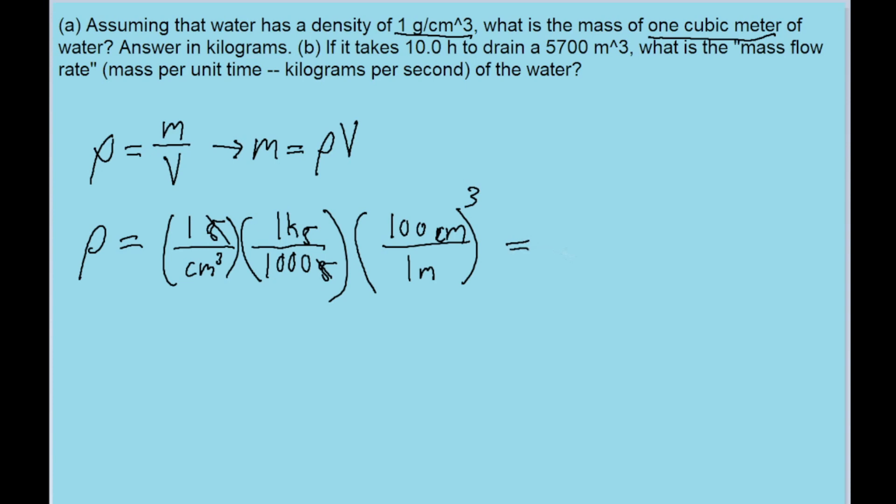So if we put this into our calculator, then we find that the water has a density of 1,000 kilograms per meter cubed. Now this is what we can put into the formula we have for the mass. We'll use our newfound density of 1,000 kilograms per cubic meter and multiply it by the given volume of one cubic meter. These cubic meters will cancel out and we're left with an answer in kilograms of 1,000 kilograms.